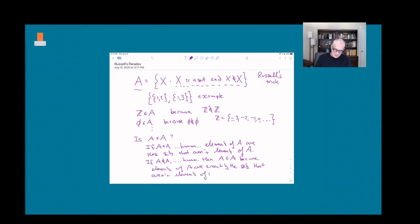So you lose either way. If you say that A is an element of A, then it can't be. And if you say that it's not, then it has to be. And you get this circular contradiction. That's why it's called a paradox.